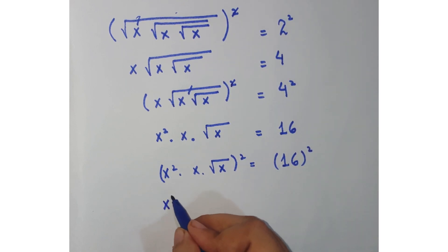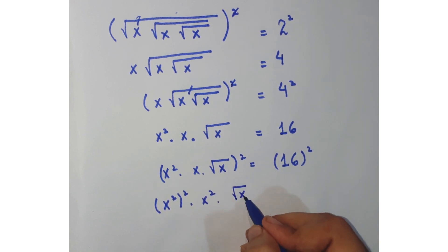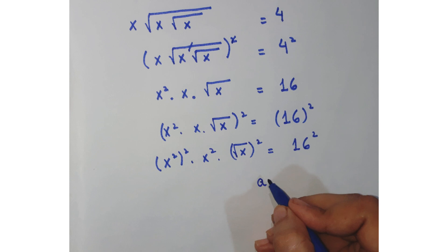What you will get is (x²)², then x², and here (√x)², and this is 16². As you know that a^(m^n) can be written as a^(m·n).